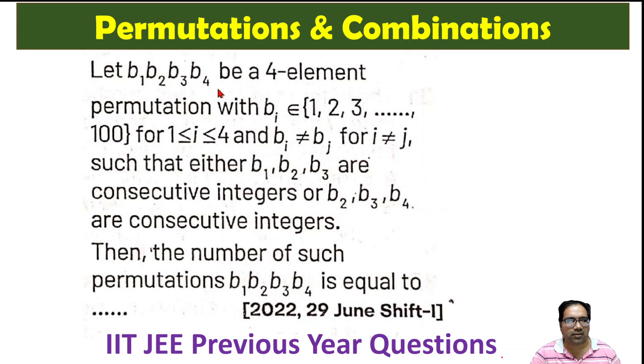B1, B2, B3, B4 is a four element permutation and B1, B2, B3, B4 can be these numbers 1, 2, 3 up to 100. But what is the condition? Basically this is a set of numbers. B1, B2, B3, B4 are set of numbers between 1 and 100.